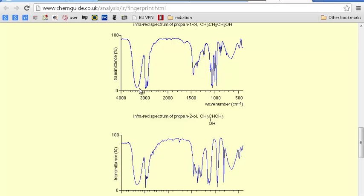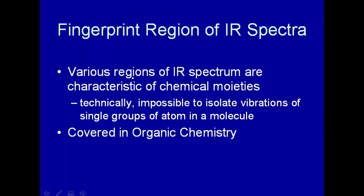On the other hand, if you're interested in just seeing what kind of groups you have, this functional region is useful. So various regions of the IR spectrum are characteristic of chemical moieties. You have a fingerprint region which is characteristic of 1-to-1 correspondence, usually, to a chemical compound. More about how to use infrared spectrum to analyze compounds is covered in organic chemistry.